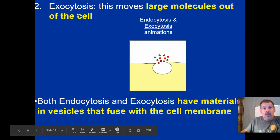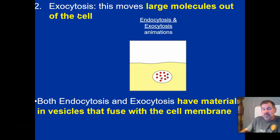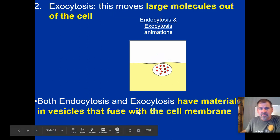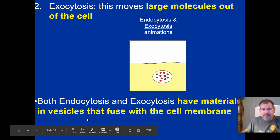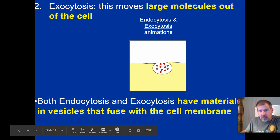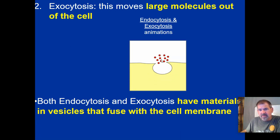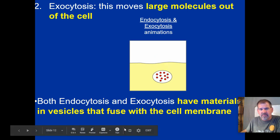Both endo and exocytosis have materials in vesicles that fuse with the cell membrane. Here's an animation showing the vesicle going out through the cell membrane and dumping these materials out of the cell — that's exocytosis.